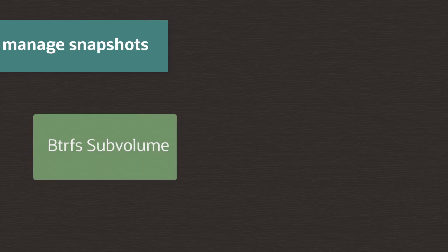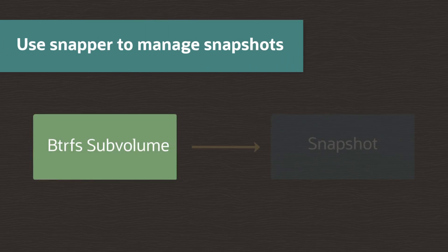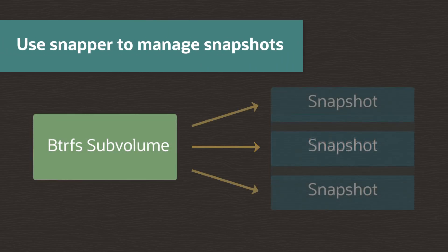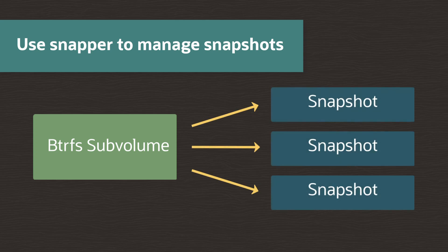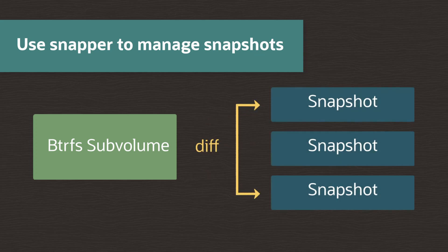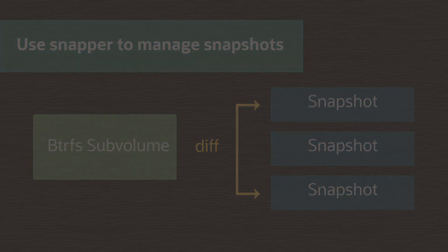Snapper is a utility for managing ButterFS snapshots. It allows for snapshot creation and deletion while also enabling users to compare the difference in snapshots and revert changes at the file level.